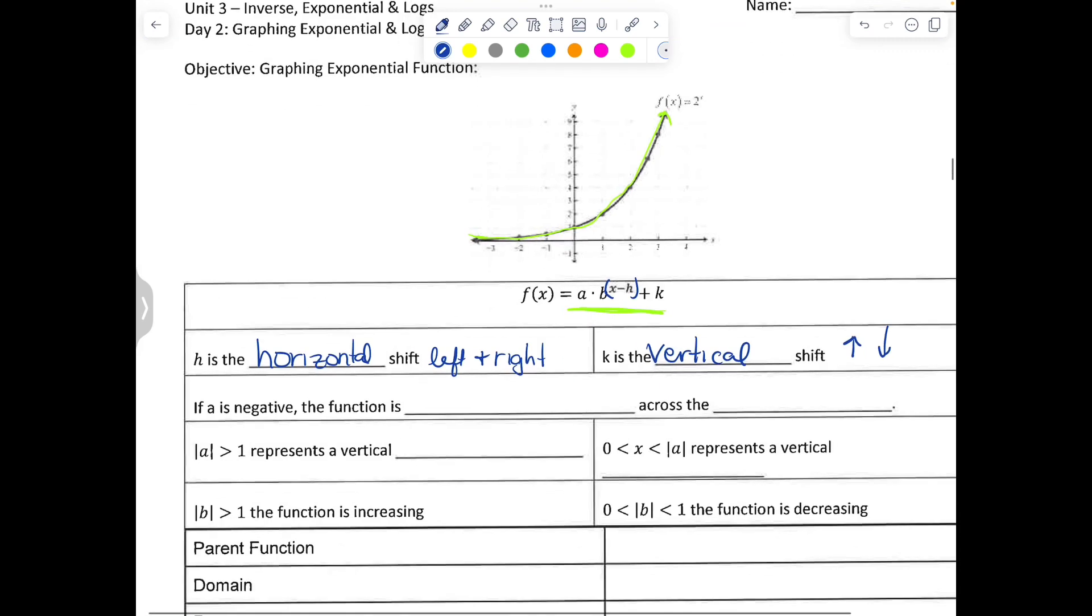k is a vertical shift and it's going to move the graph up and down. If a is negative, just like we've done before, it's going to be a reflection across the x-axis.